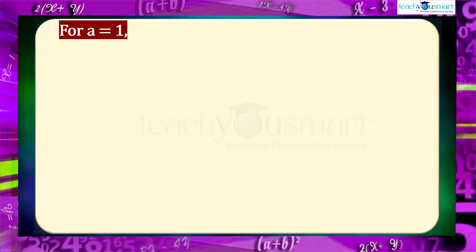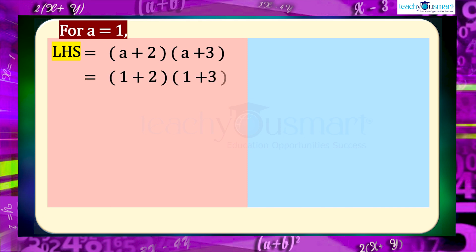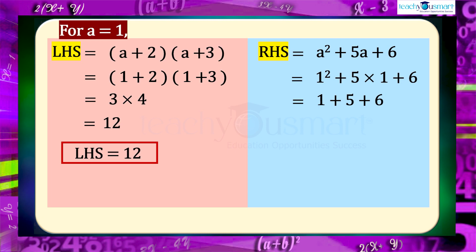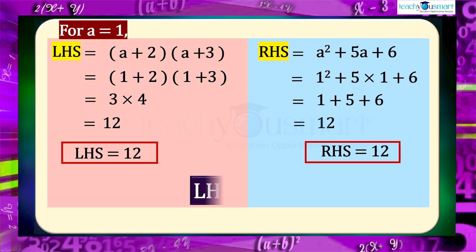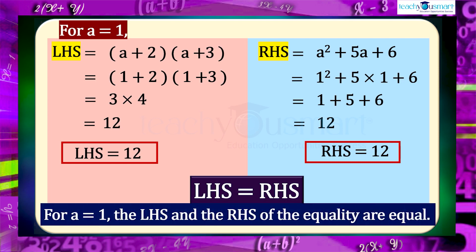If we put a = 1, the LHS becomes (1+2)(1+3) = 3 × 4 = 12. The RHS becomes 1² + 5(1) + 6 = 1 + 5 + 6 = 12. Therefore LHS = RHS. For a = 1, both sides are equal.